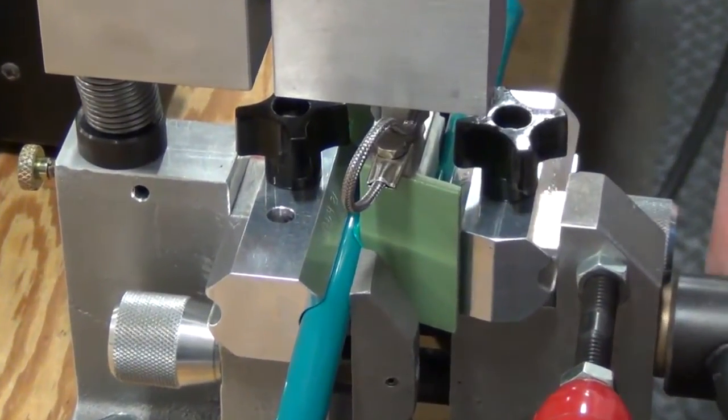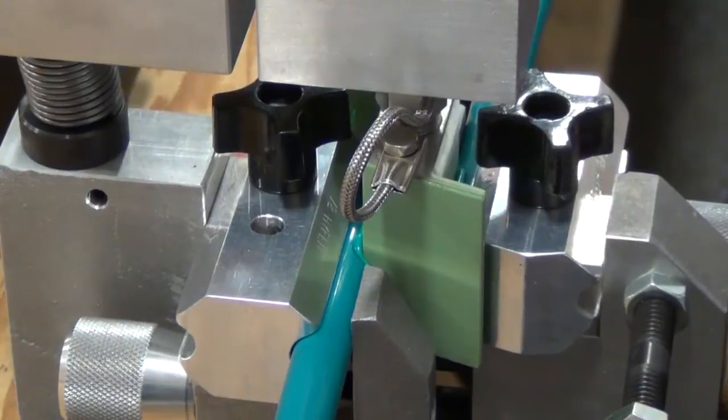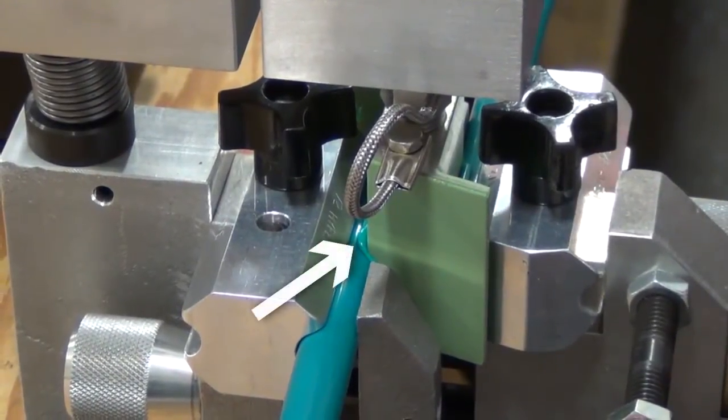Continue turning large wing nut slowly as belt ends melt and material is squeezed out of weld area.